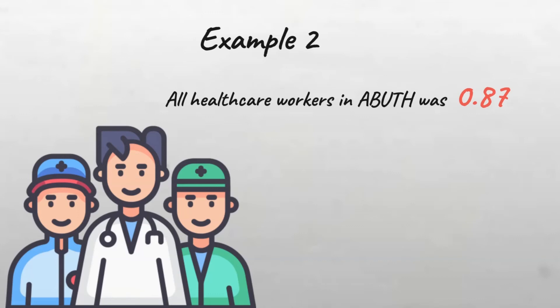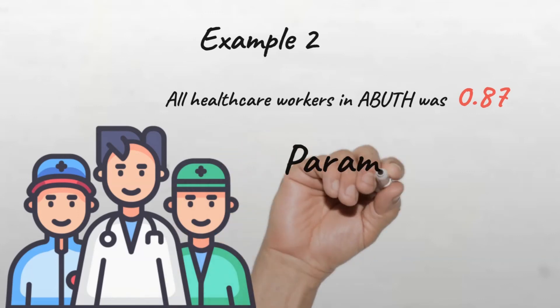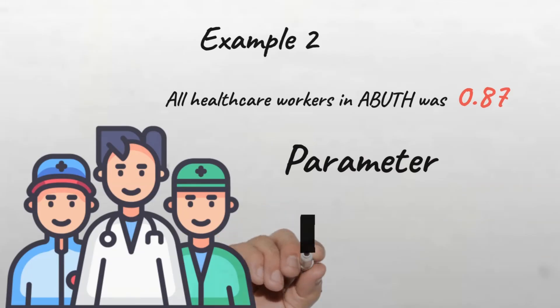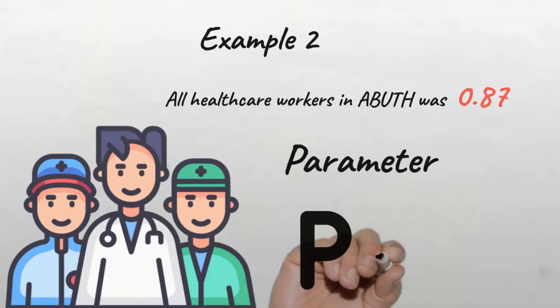You're correct. This is a parameter, simply because the data was obtained from the whole population of health workers, so we'll denote it using capital letter P. We can say capital P equals 0.87, and anybody seeing this knows clearly that this is a parameter.